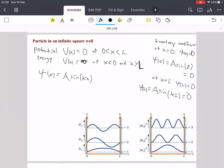So in other words, this then gives you the condition that kL is equal to nπ, where n is one of these integer values, 1, 2, 3, 4, 5, and so on.